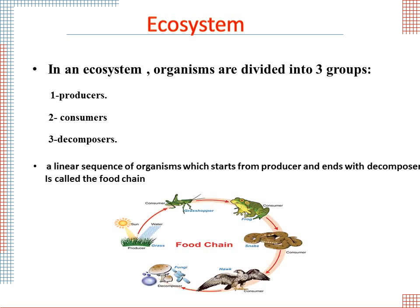For example, consider this food chain. Grass is eaten by the grasshopper. The grasshopper is eaten by the frog. The frog is eaten by the snake. The snake is eaten by the hog. And when the hog dies, it is decomposed by the fungi.